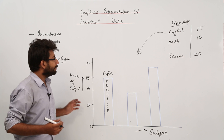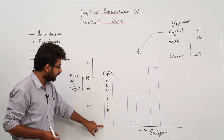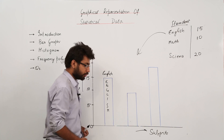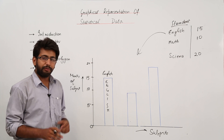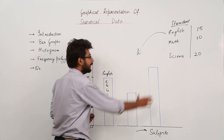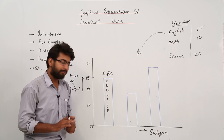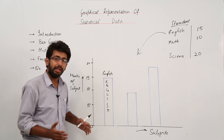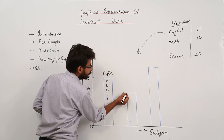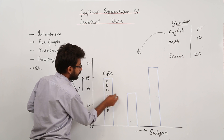For the second element, Math, we draw a similar bar with the same width, leaving a fixed gap from the English bar. Since the marks in Math are 10, we draw the rectangle and stop when we reach the value 10 on the y-axis. If you draw an imaginary horizontal line, you'll see it aligns with 10.